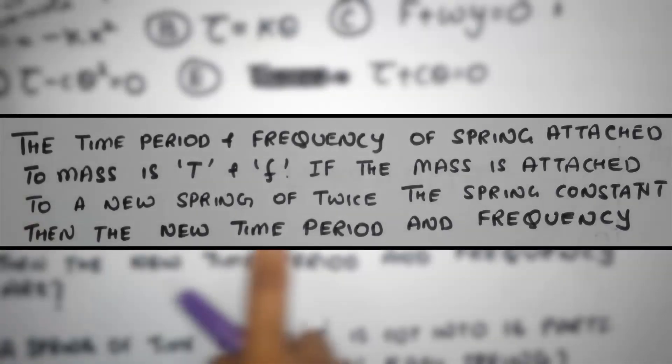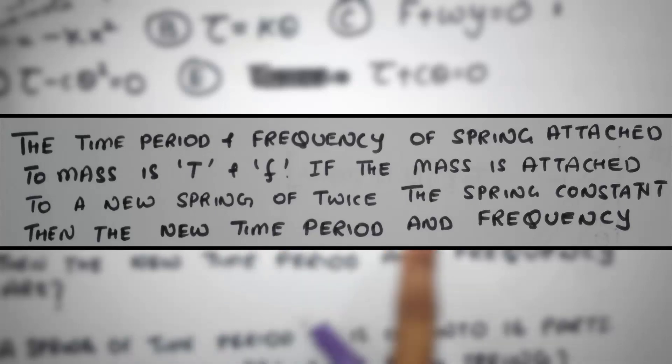We have a question. The time period and frequency of a spring attached to the mass is T and F. If the mass is attached to a new spring of twice the spring constant, then the new time period and frequency are...